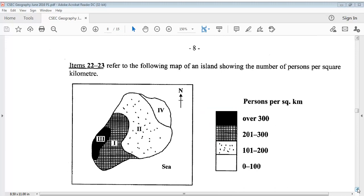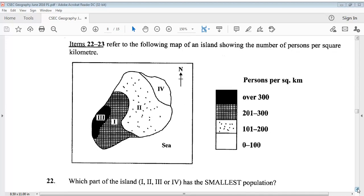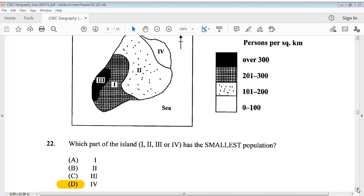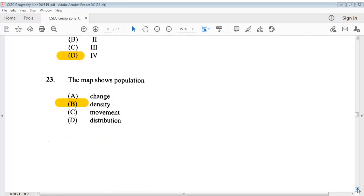Items 22 to 23 refer to the following map of an island, showing the number of persons per square kilometer. You can take a look at your map there. It says, which part of the island, 1, 2, 3, or 4, has the smallest population? The answer is D, 4. Question 23 says, the map shows population? B, density.